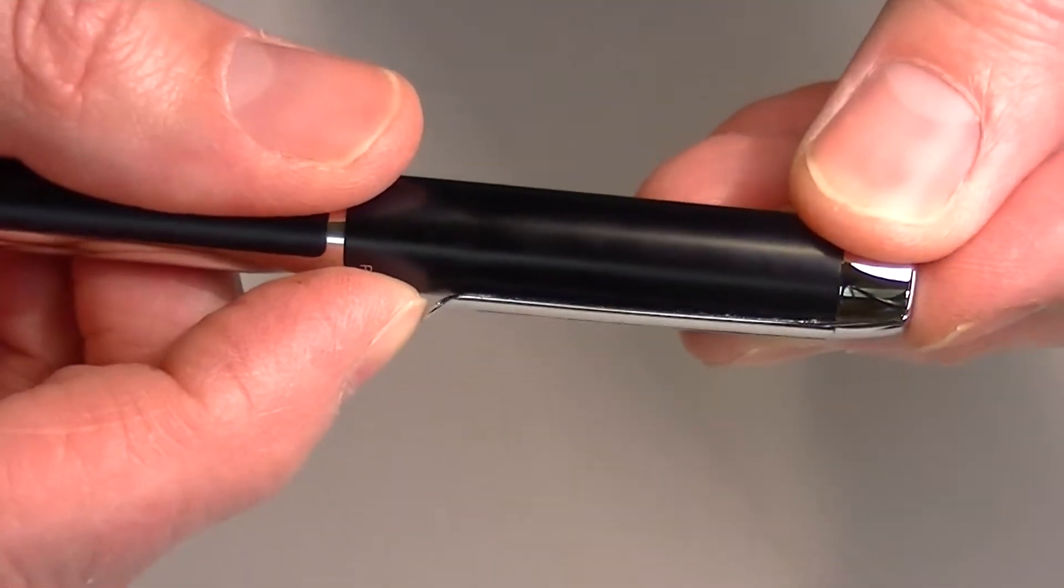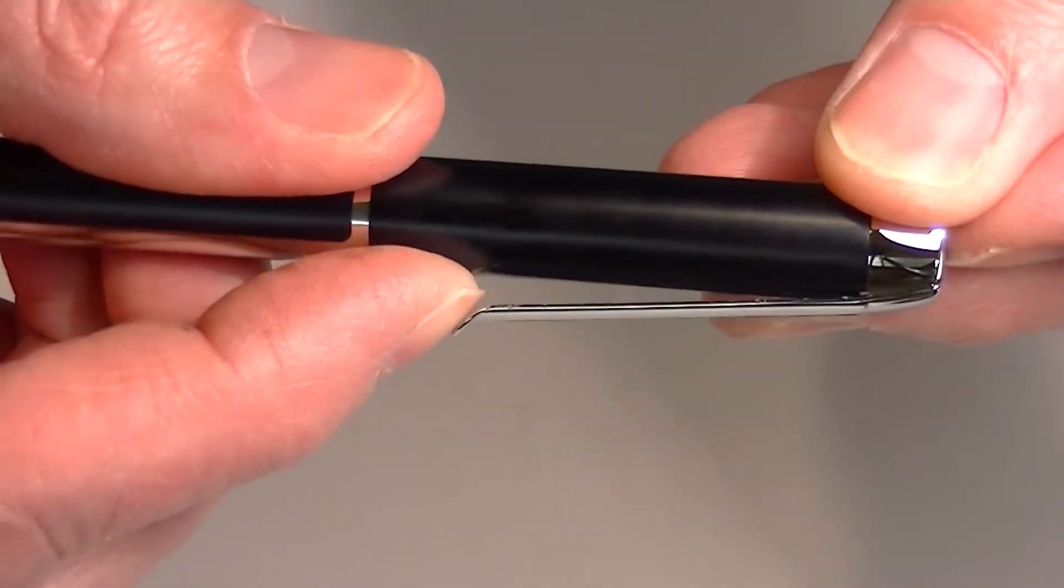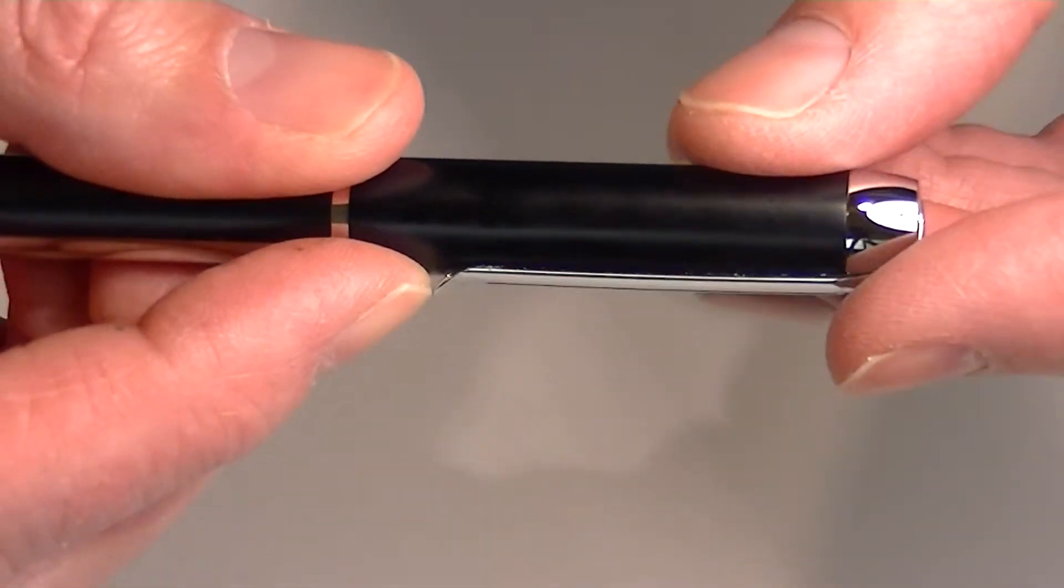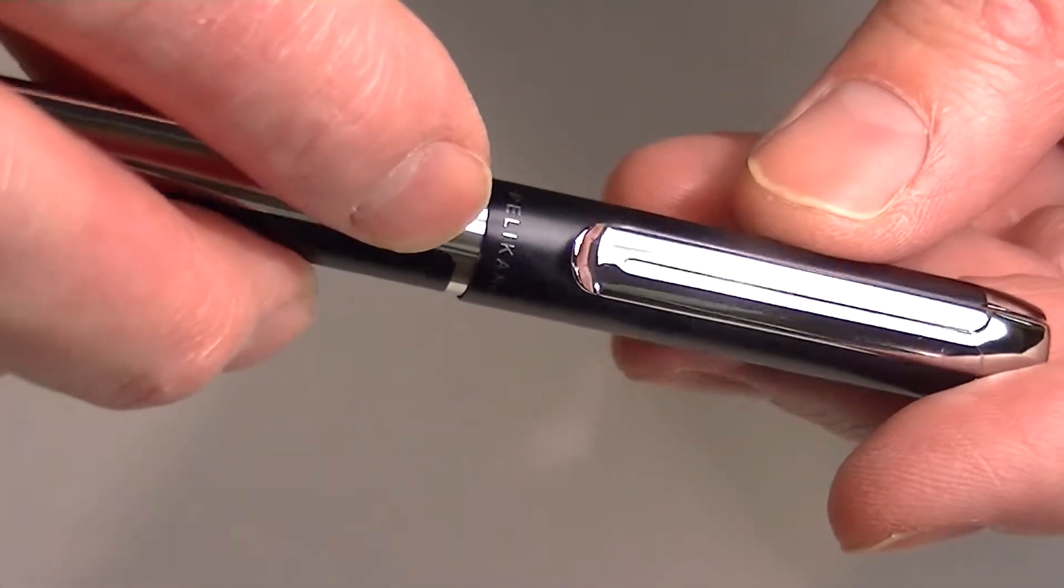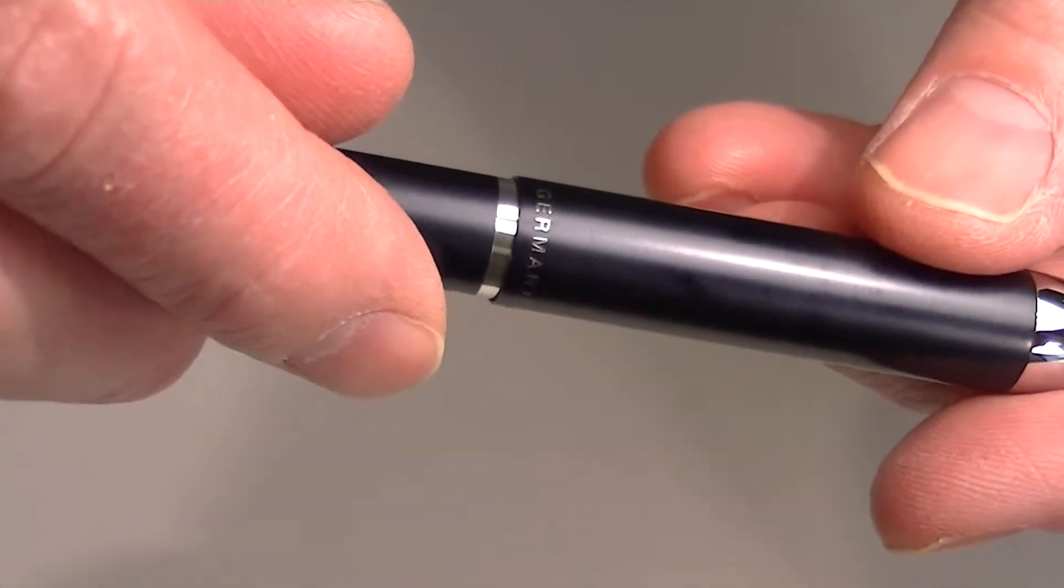It flares out. It makes it easier to get into your pocket. It opens nice and wide. It has a slight hinge top to it. At the bottom of the cap printed in chrome is Pelican and on the back side Germany.